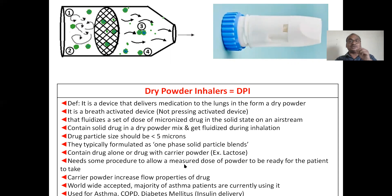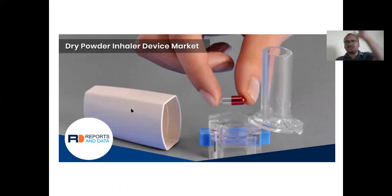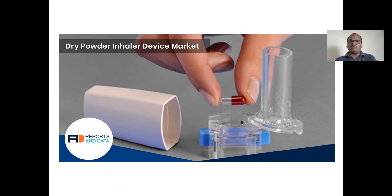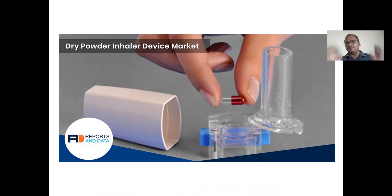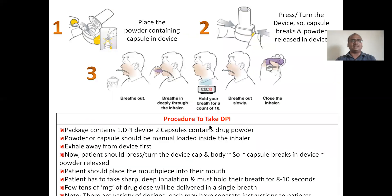It needs some procedure to allow the measured dose because if a patient inhales less, only a lesser amount of drug will enter — we cannot measure here. If a patient takes a long breath, the entire powder will enter. That's why we cannot measure. Carrier powder increases the flow properties — very important: why we use lactose with a dry powder inhaler. It is worldwide accepted and widely used for diabetes; insulin is also now delivered through inhalers. DPI in the market is present in capsule form, the capsule containing 50 mg or 100 mg of medication. The capsule breaks when you press the system, powder is released, then you inhale. You may inhale the entire powder or only part of it — that depends on the patient's lung capacity, so we cannot measure exactly how much powder entered the lung.